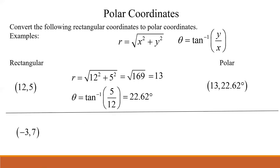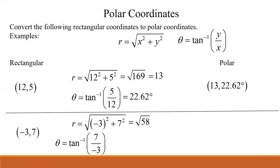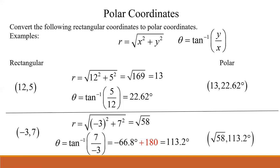Let's do another example with the point (-3, 7). Find the magnitude using the Pythagorean theorem — watch your signs — and you get √58. Now find theta using arctan(y/x), and remember this point is in quadrant two, so we need to add 180° to the calculator answer. You get 113.2°. So our polar coordinate is (√58, 113.2°).